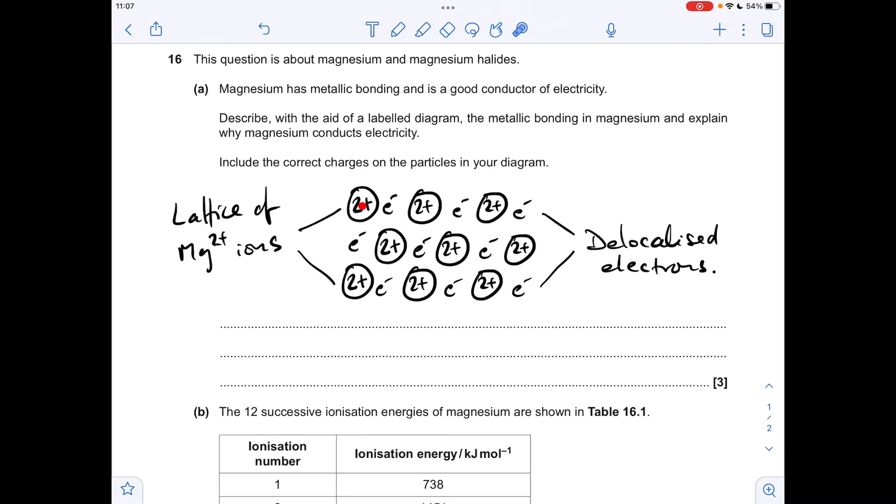So that's a lattice of magnesium two plus ions, and just dot some electrons around. These are delocalized electrons. And why does magnesium conduct electricity? It's because the delocalized electrons can move.